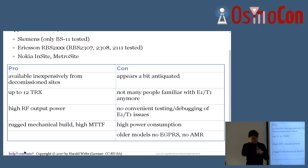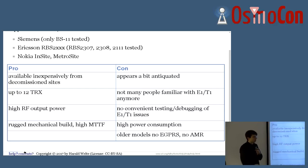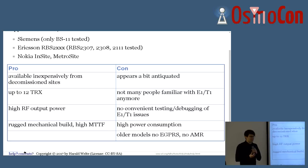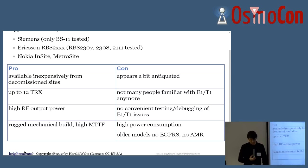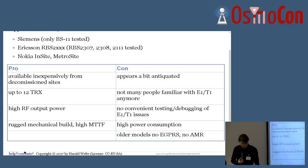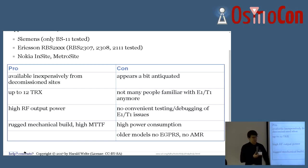On the con side, it's a bit antiquated. Not many people are familiar with the technology — installing E1-T1 lines, debugging and analyzing issues. You just don't have an E1 port on your laptop, and even in embedded Linux devices, nothing has an E1 port. You end up needing PCI Express slots and PCI cards for the E1 interface. Power consumption tends to be really high because it's old equipment and efficiency wasn't a key aspect. Also, the very old models like the Siemens BS11 don't have EGPRS — no 8PSK support or AMR codec, because these devices predate adaptive multirate.